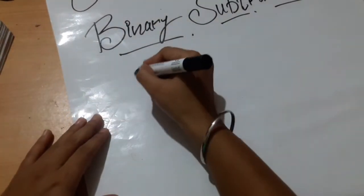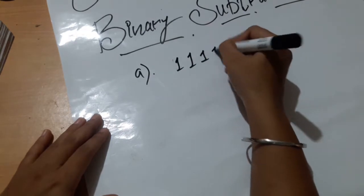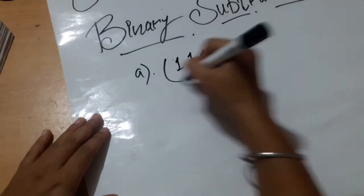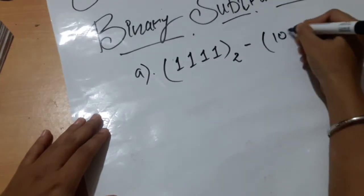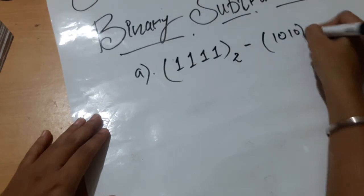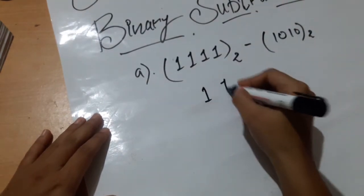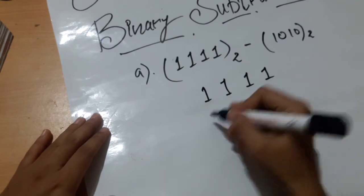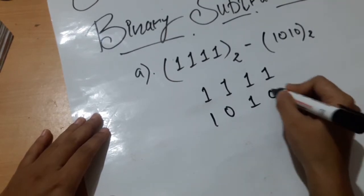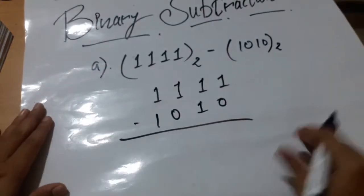Our first question for today will be 1111 to the base 2 minus 1010 to the base 2. First we will arrange these numbers and then we will start our subtraction.